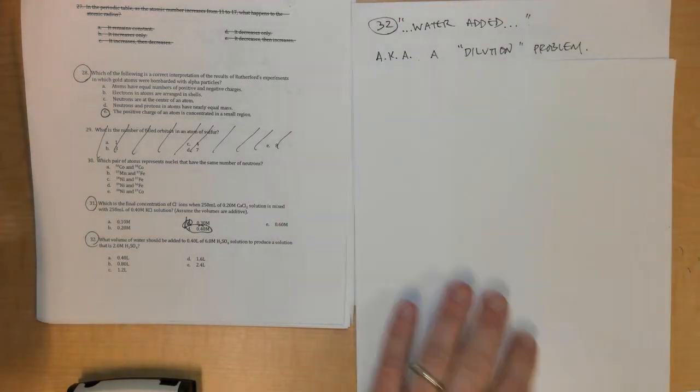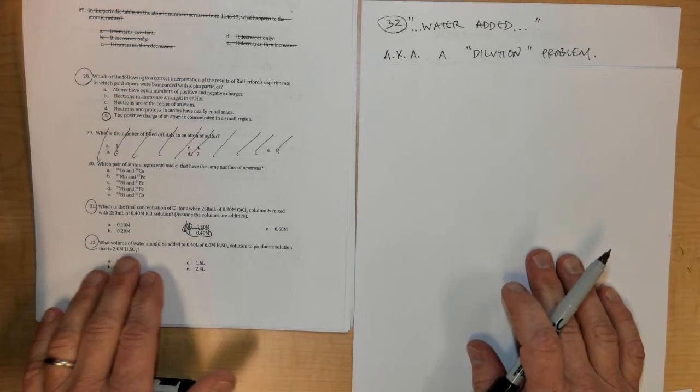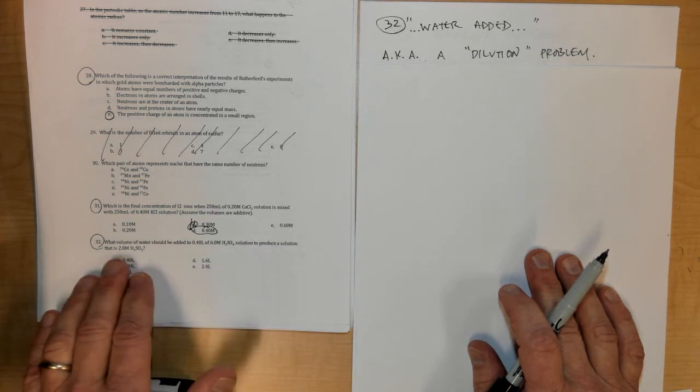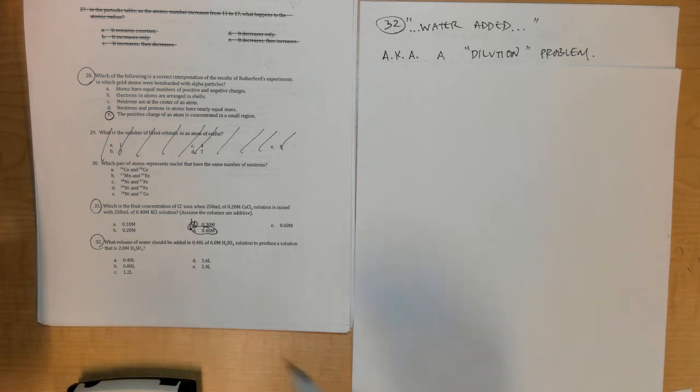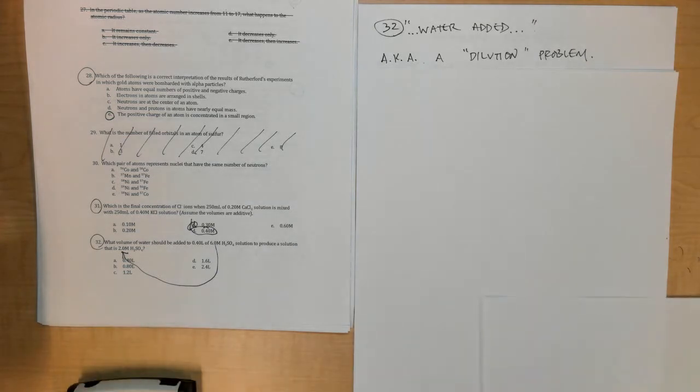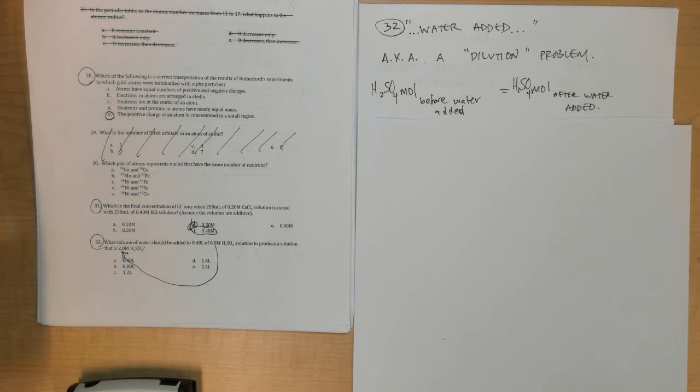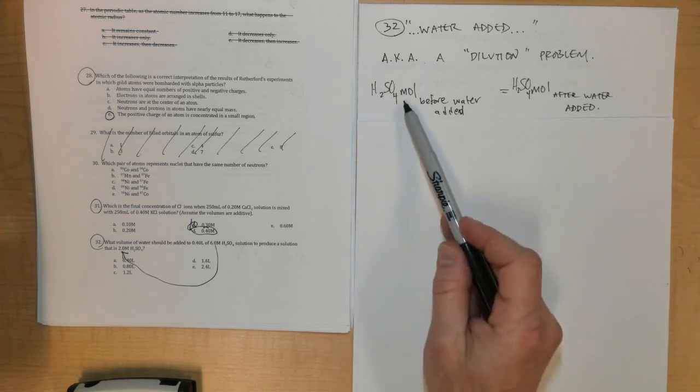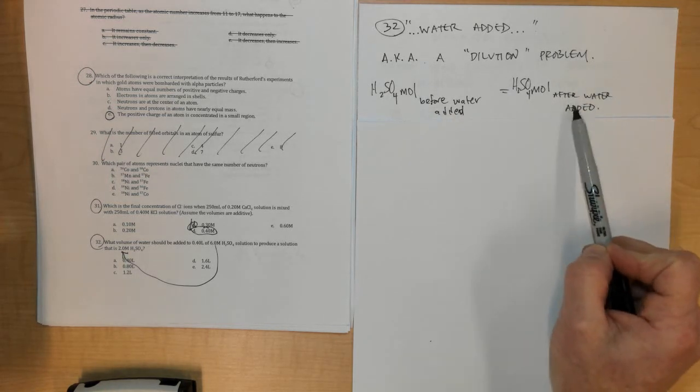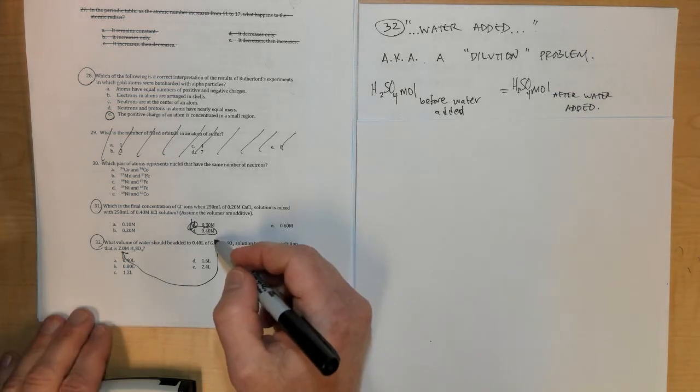Next problem, number 32: What volume of water should be added to 0.4 liters of 6 molar H2SO4 to produce a solution that is 2 molar in H2SO4? Notice my concentration goes down since I'm adding water to it. I know that this is also known as a dilution problem - I'm diluting this with water, I'm taking a concentration and I'm making it less by adding water to the solution. When I do this, the moles of the solute don't change - the moles of H2SO4 that were there before I added the water are equal to the moles of H2SO4 after I add the water.